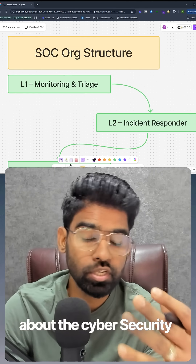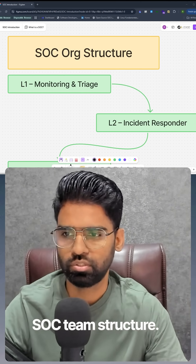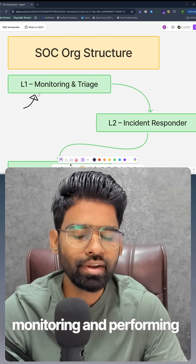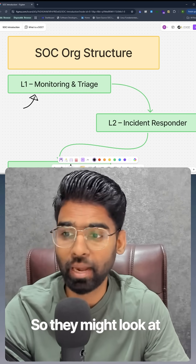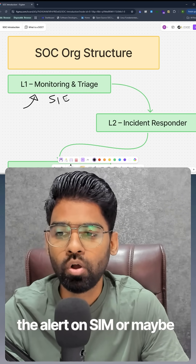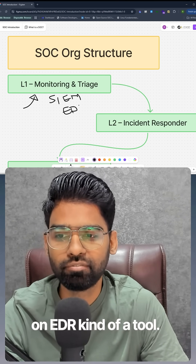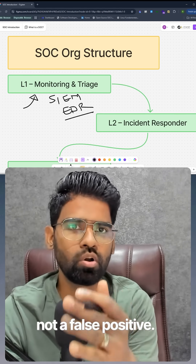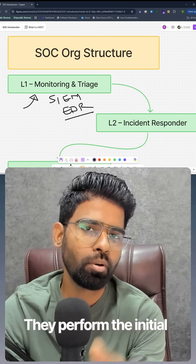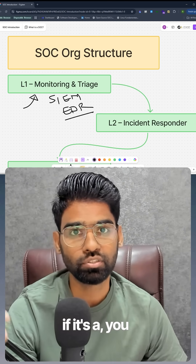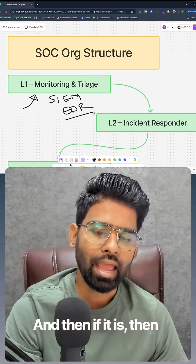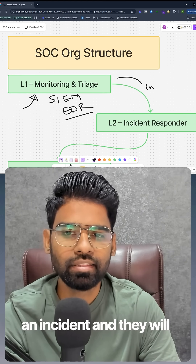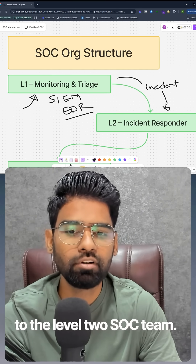Let's learn about the cybersecurity SOC team structure. Level one, the SOC Level 1, is all about monitoring and performing the initial triage. They might look at alerts on a SIEM or an EDR tool. Whenever they get an alert, their first job is to make sure it's not a false positive. They perform the initial triage to identify if it's a serious alert, and if it is, they will create an incident and assign it to the Level 2 SOC team.